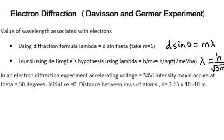Now, in an electron diffraction experiment, say for an accelerating voltage of 54 volts, intensity maximum occurs at theta equal to 50 degrees. Taking initial kinetic energy as 0, which means assuming that initially the electrons are at rest and the distance between the rows of atoms which are acting as a diffraction grating is 2.15 times 10 to the power minus 10 meter.